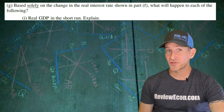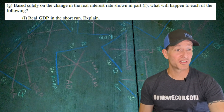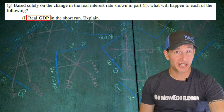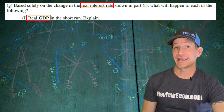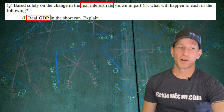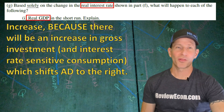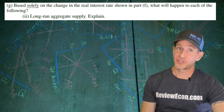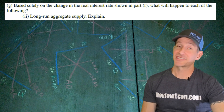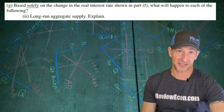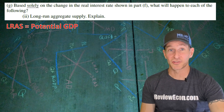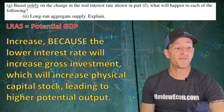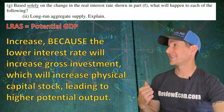For part G, based solely on the interest rate change from part F, we explain what happens to real GDP in the short run. The lower real interest rate increases gross investment and interest-rate-sensitive consumption, shifting aggregate demand to the right, which causes equilibrium real GDP to increase. For part G part ii, we explain the impact on long-run aggregate supply. The increase in gross investment increases the physical capital stock, leading to higher potential real output — so the long-run aggregate supply curve shifts to the right. If you have an answer like that, you get the point.